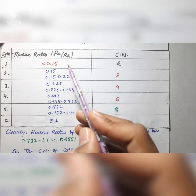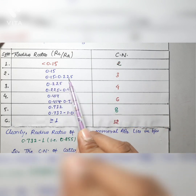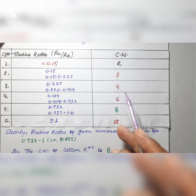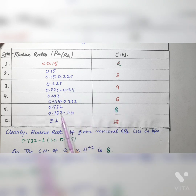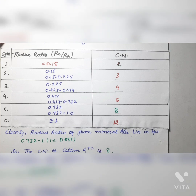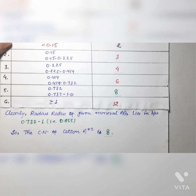You should remember the radius ratio and the corresponding coordination number: if radius ratio is between 0.15 and 0.225, coordination number is 3; if 0.225 to 0.414, coordination number is 4; if 0.414 to 0.732, coordination number is 6; if 0.732 to 1.0, coordination number is 8; and if radius ratio is greater than or equal to 1, the coordination number is 12. Remember this table to answer these types of questions. The correct answer for this question is 8.